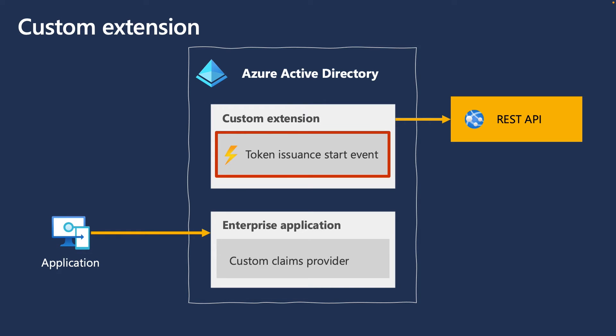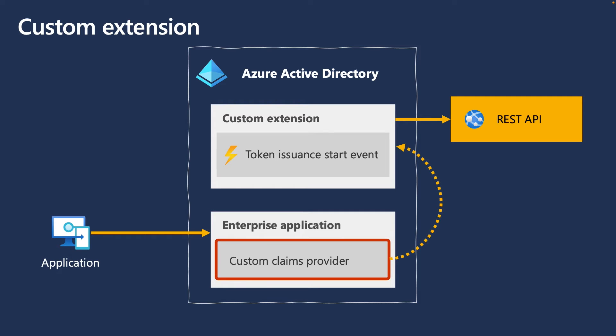Azure Active Directory supports the Token Issuance Start Event. The Token Issuance Start Event is triggered once a user completes all of their authentication and a security token is about to be issued. To customize the tokens returned to your application, enterprise applications in your Azure Active Directory tenant can configure a Custom Claims Provider to fetch data from external systems. The Custom Claims Provider points to a custom extension and specifies the attributes to be added to the security tokens. Multiple claims providers can share the same custom extension, so each application can choose its own set of attributes to be added to the security tokens.